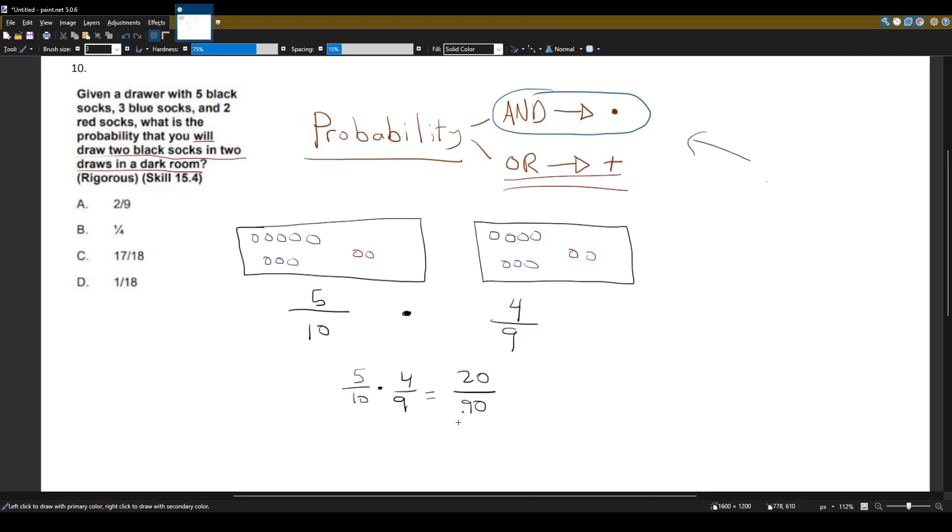And twenty over ninety is not a choice here, but if we reduce this, we can get two out of nine, and that actually is choice A.